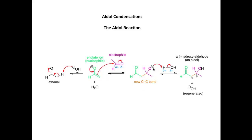Finally, the alkoxide ion is protonated on reaction with water, and we form a beta-hydroxyaldehyde. The name aldol refers to the fact that the product contains both an aldehyde and an alcohol group within the molecule. You'll notice that hydroxide ion is introduced at the beginning and is regenerated at the end, so it acts as a catalyst.